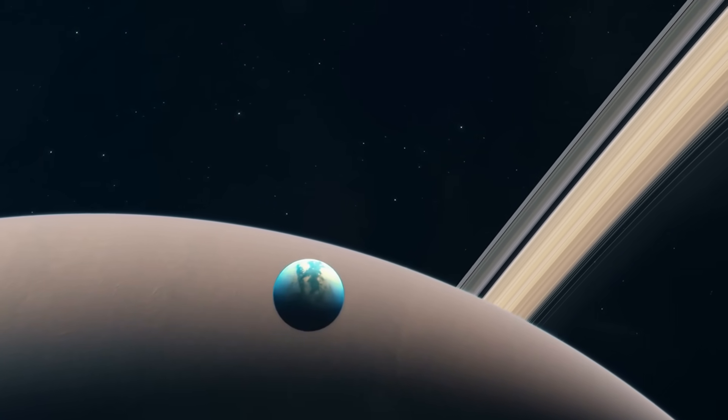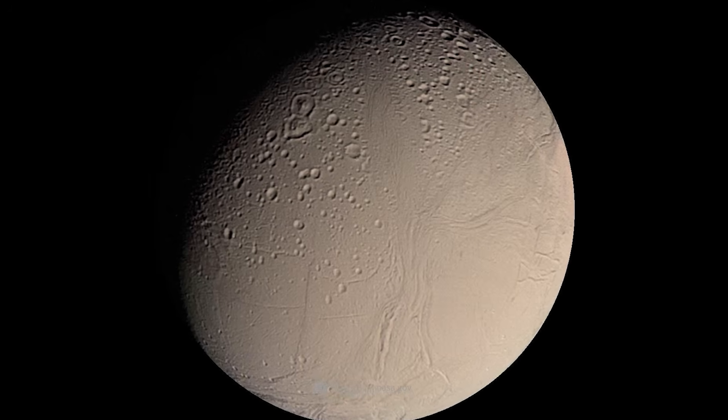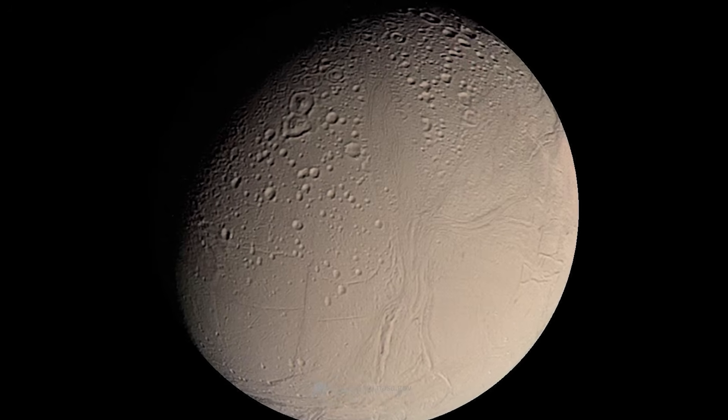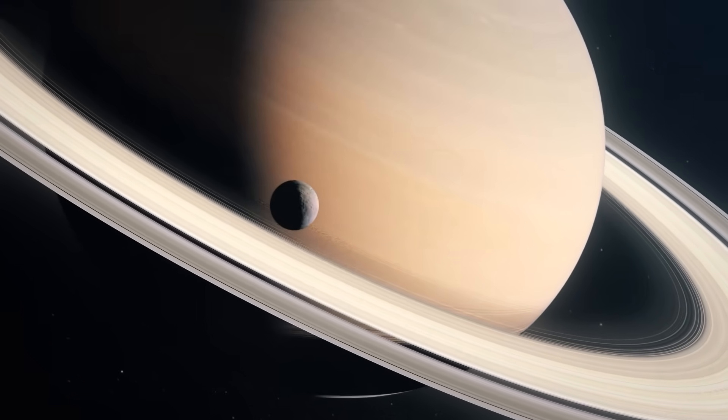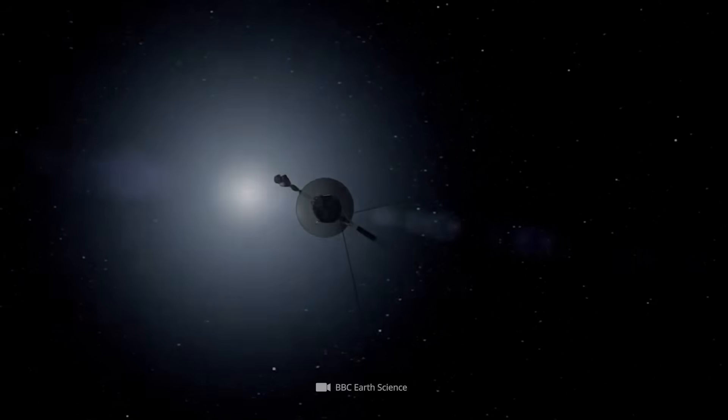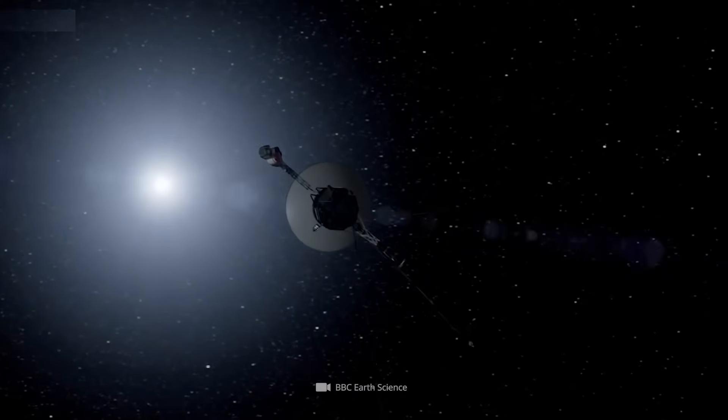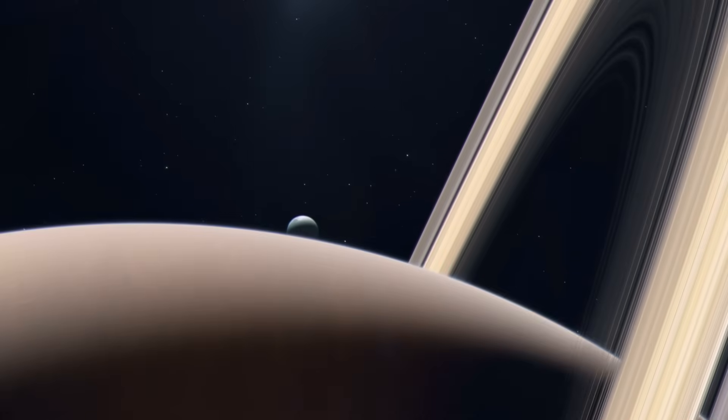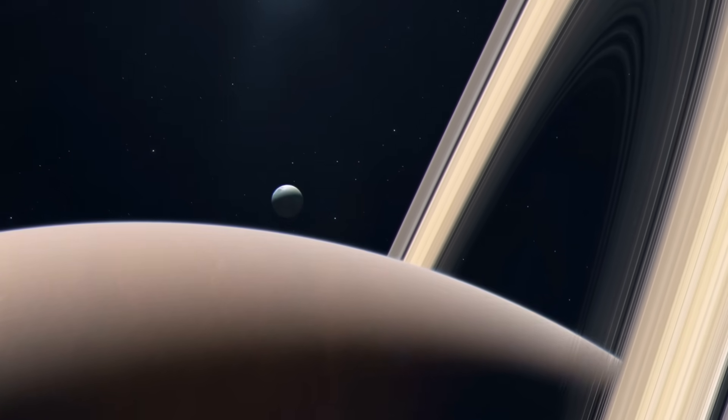And speaking of moons, Voyager 2 also took a close look at the ringed planet's satellites, including Enceladus, which showed signs of an internal heat source, providing us with the first indication that a full-fledged saltwater ocean is sloshing around beneath its icy surface. In fact, before Voyager 2's journey, we didn't even know that Enceladus existed, nor did we know about the other 11 new moons that the probe identified in Saturn's vicinity.